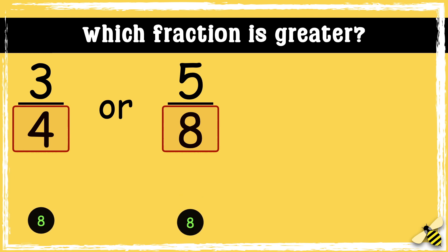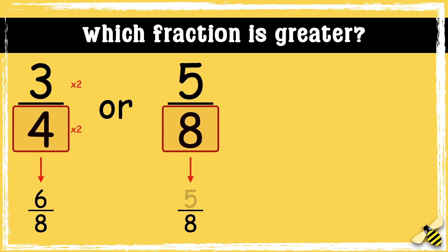I can see that 8 is the lowest common multiple, so we can make both the denominators 8. To get 8 we need to multiply 4 by 2, so we also need to multiply the numerator by 2. 3 times 2 is 6. As the second fraction already has 8 as its denominator, we don't need to do anything.